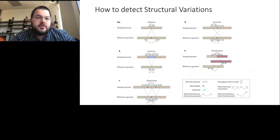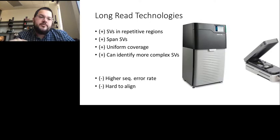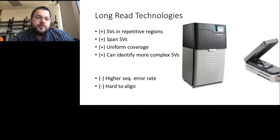Today we are going to focus on long-read technologies such as PacBio and Nanopore, and I'm going to show you why. They have different advantages: we can observe structural variants in repetitive regions where it's generally very hard to map short reads; they can span the structural variant, meaning we can follow the continuous sequence of a read through a structural variant; they have more uniform coverage and less GC bias. As I will show, we can identify even more complex structural variants beyond the five types I mentioned. However, we must cope with two challenges: a much higher sequencing error rate than Illumina, and the length plus error rate makes them hard to align.